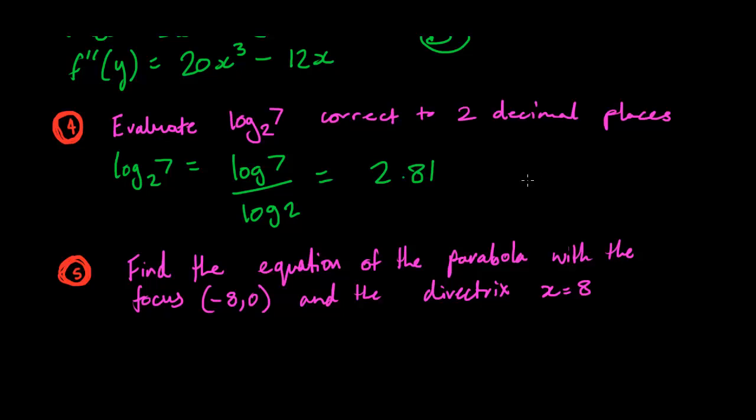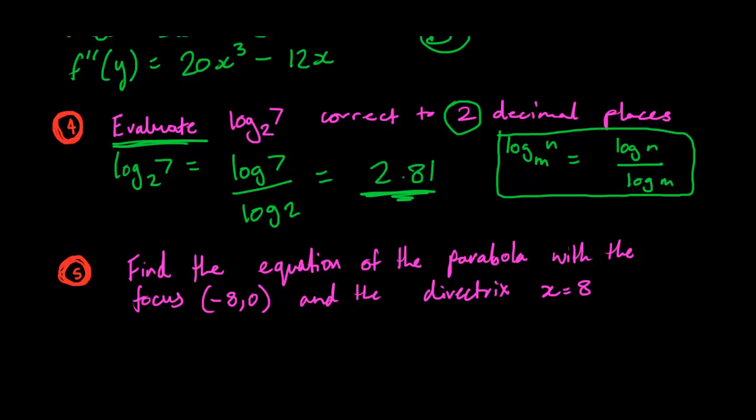Now, the change of base rule, you should be able to find it in your notes, but it's just like this. Suppose we have log, let's call this m and n. The change of base rule just works like this: it's log n over log m. You can just chuck that straight into your calculator. This is like a little rule that you can possibly remember. If it says evaluate, they want you to get the final answer, and in this case we have evaluated, and that is 2.81, and it does two decimal places.